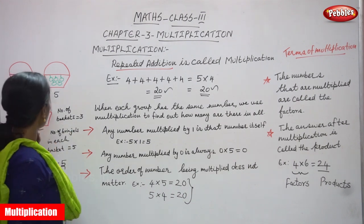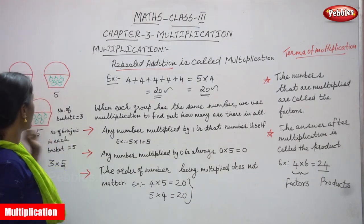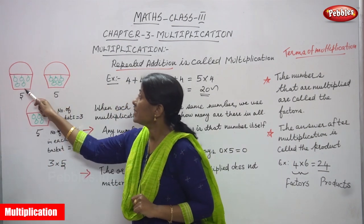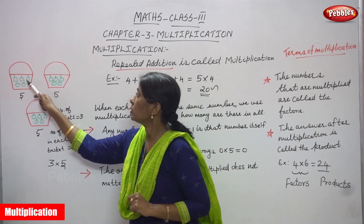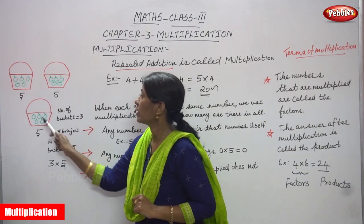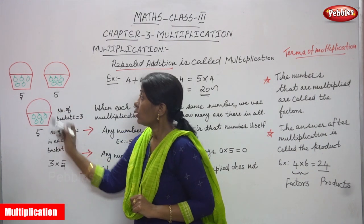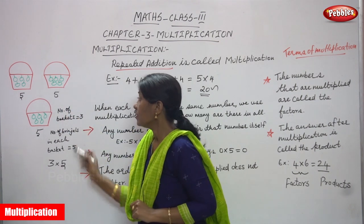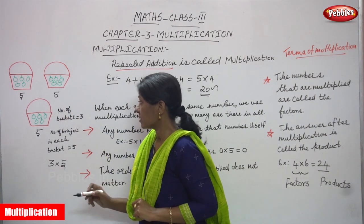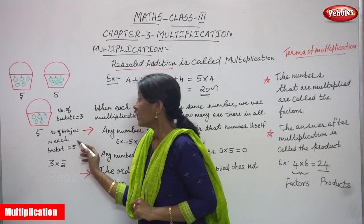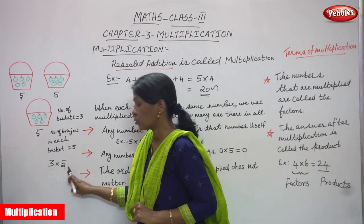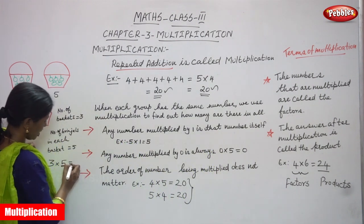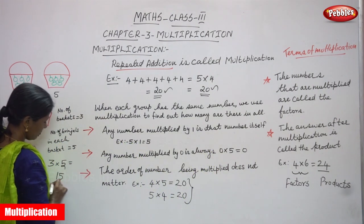There are 3 baskets. In each basket, how many brinjals? In each basket, 5 brinjals — 1, 2, 3, 4, 5 in each. So there are 3 baskets, and in each basket 5 brinjals are there. Number of baskets is 3. Number of brinjals in each basket is 5. So 3 into 5 — you can get 15.